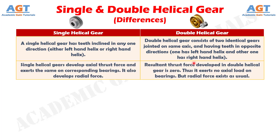Number 2: single helical gears develop axial thrust force and exert the same on corresponding bearings. They also develop radial force. Whereas, the resultant thrust force developed in double helical gear is zero, and thus it exerts no axial load on bearings. However, radial force exists as usual.